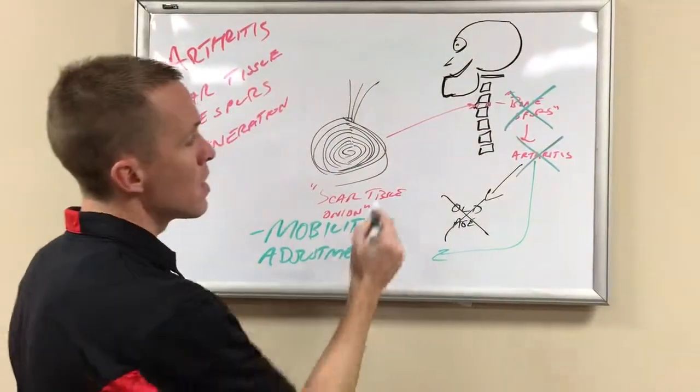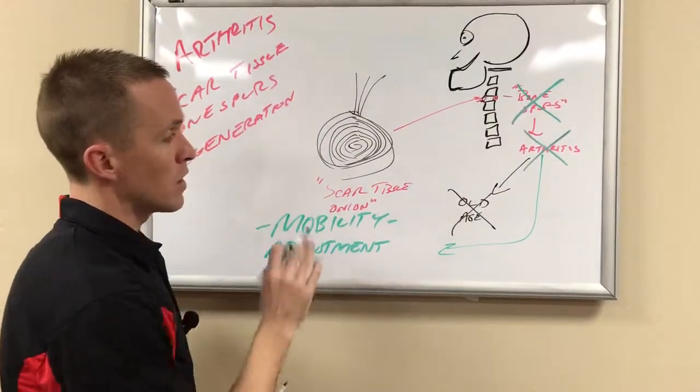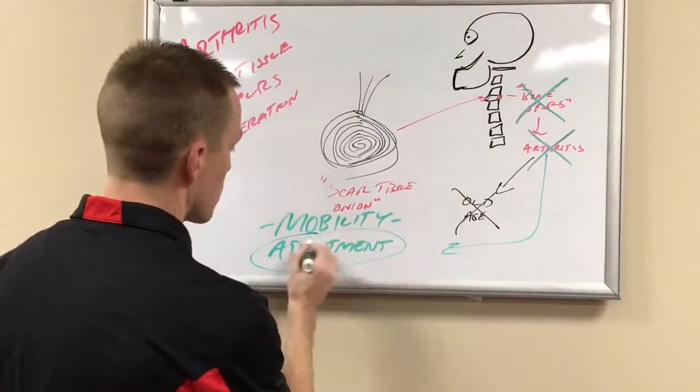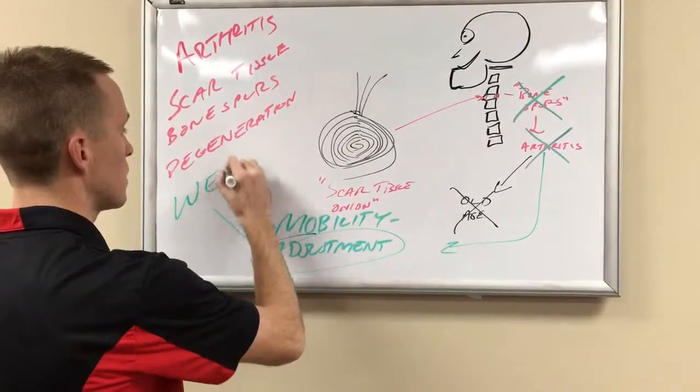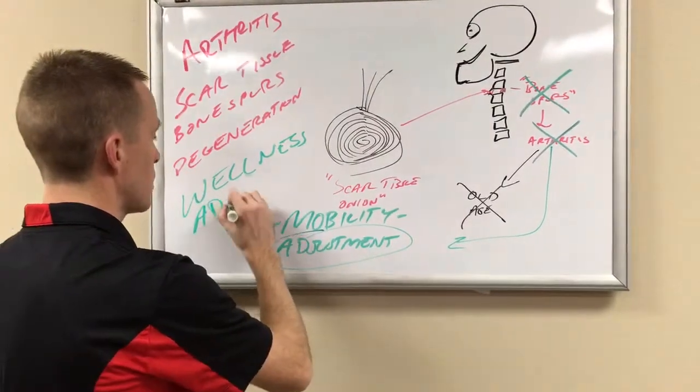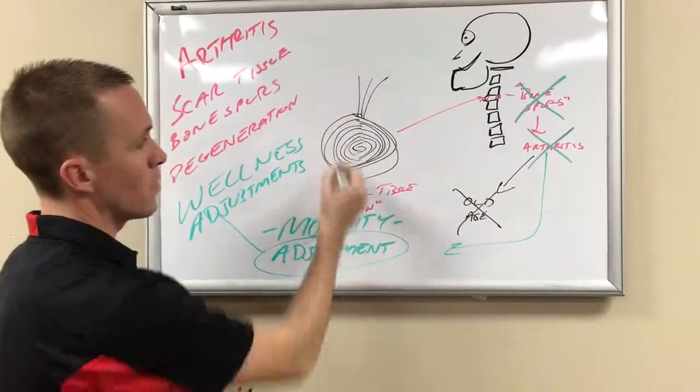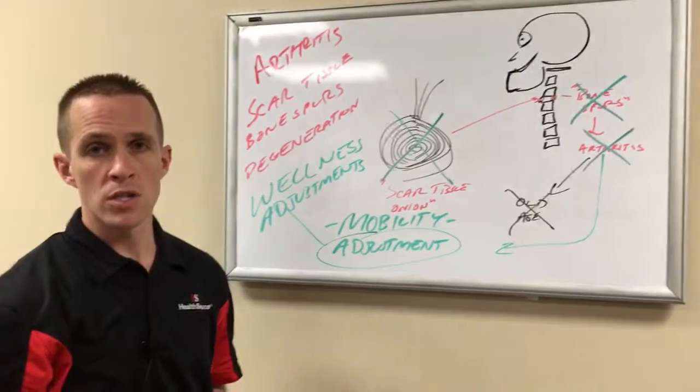In the long term, we need to look at long-term wellness. Adjustments are vital so that we do not end up with scar tissue onions happening in our spine.